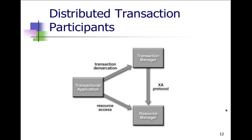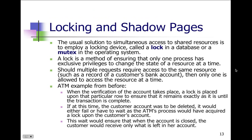Here's a picture of the distributed transaction participants. We have the transaction manager communicating with the resource manager, and we have the transactional application itself. The application goes to the transaction manager — this is the transaction demarcation. It asks the transaction manager for something, which then asks the resource manager whether the resources are available and if anybody else is using them. Protocols go back and forth between the transaction manager and the resource manager. That's really the big picture of how the transaction manager fits in.